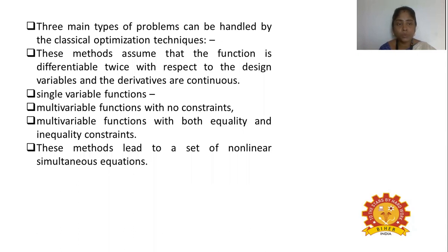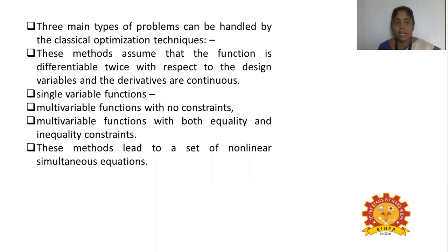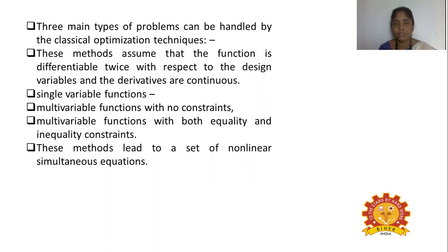The second type is multivariable functions with no constraints, where various factors are modified in different ways without any difficulties. The third type is multivariable functions with both equality and inequality constraints — variable functions that include both equality and inequality constraints.